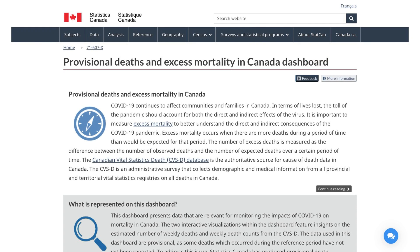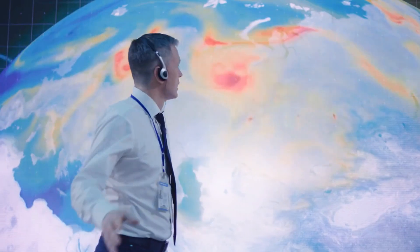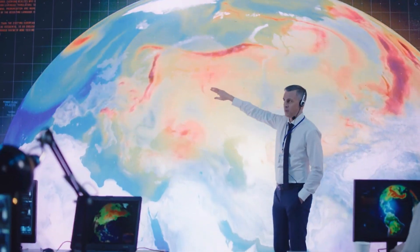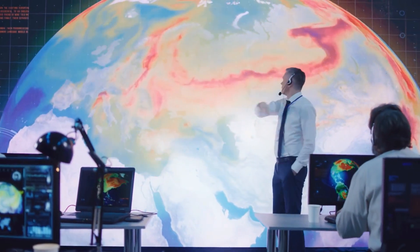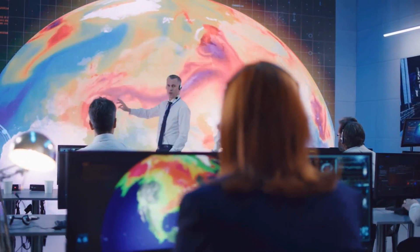And by the way, all this data is taken directly from Statistics Canada. So projections made in 2019 by the United Nations underestimated deaths in Canada by 11% in 2020, by 13% in 2021, and they were off by a whopping 20% in 2022. However, even though the UN projections were off by 20% in just three years, we are supposed to believe their predictions for other events in 2050 and 2100 are completely reliable.